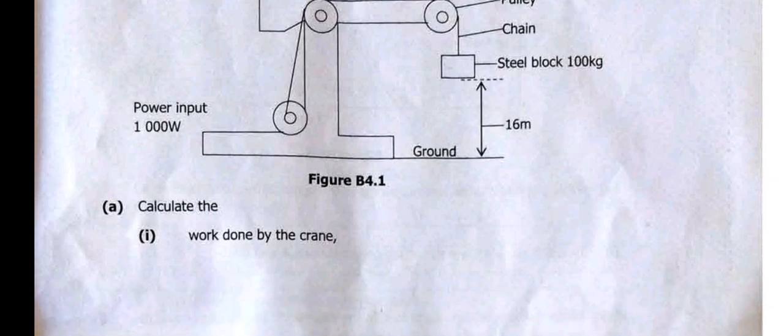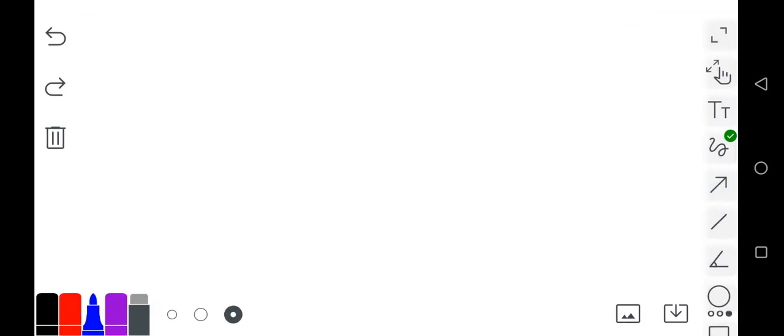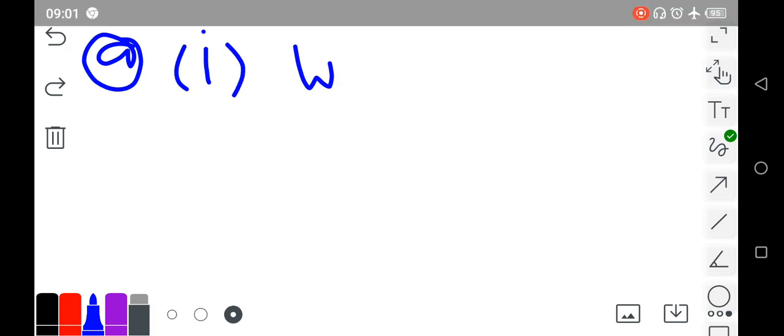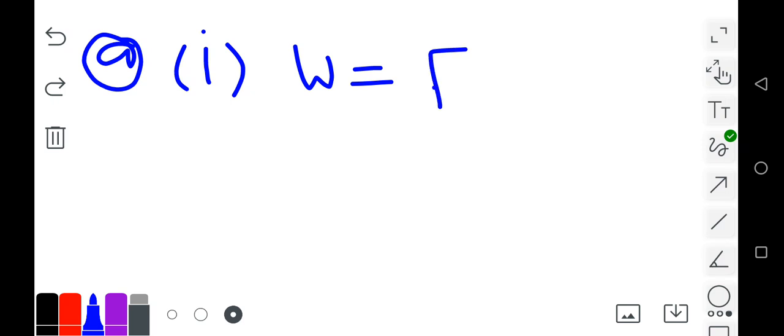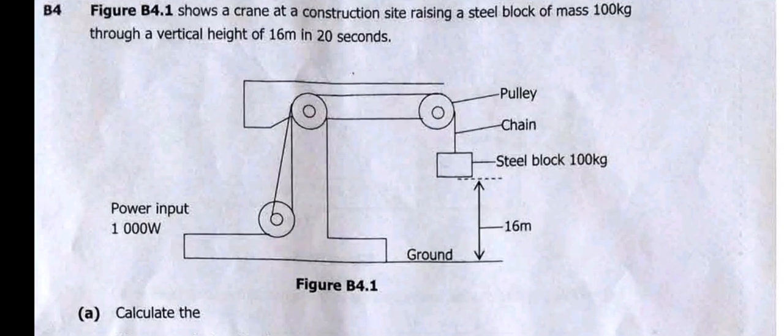The first question says calculate the work done by the crane. The formula for work is W equals force times distance. We don't have the force directly from the question, but we can simplify by saying force equals mass times acceleration. Since the crane is moving something vertically upward, your acceleration should be acceleration due to gravity, which is 10 newtons per kilogram.